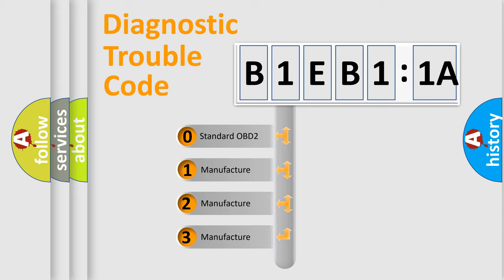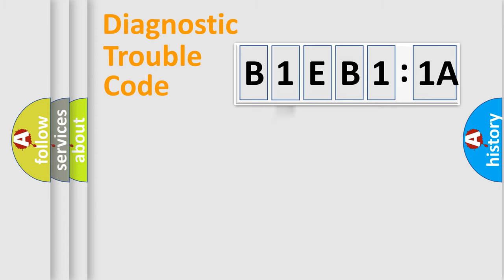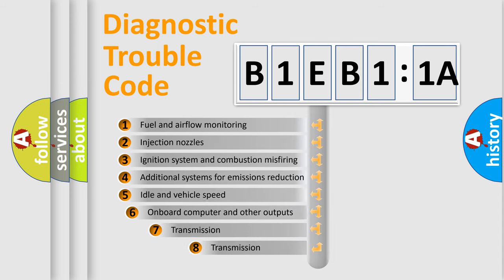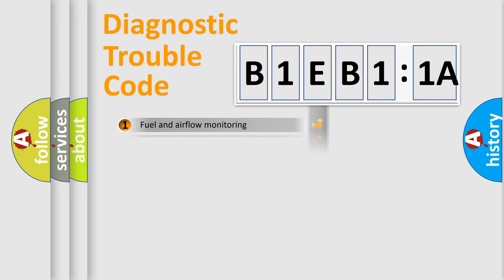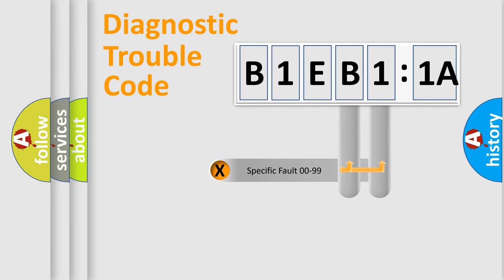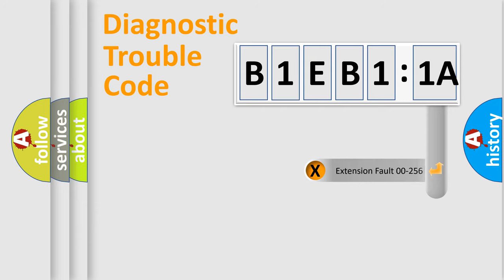If the second character is expressed as zero, it is a standardized error. In the case of numbers 1, 2, or 3, it is a manufacturer-specific error. The third character specifies a subset of errors. The distribution shown is valid only for the standardized DTC code. Only the last two characters define the specific fault of the group. The add-on to the error code serves to specify the status in more detail.